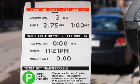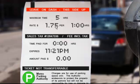Set the maximum time to any number greater than or equal to 4 hours so that you can select it later on the parking meter. Next, adjust the rate to $1.50 per 30 minutes.